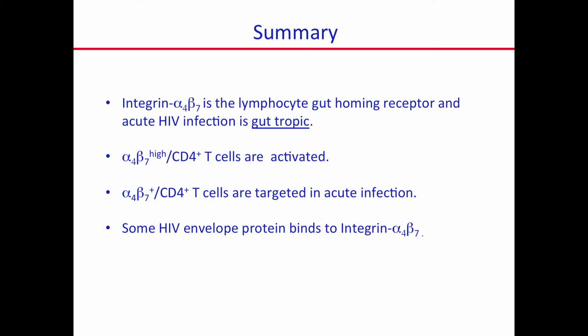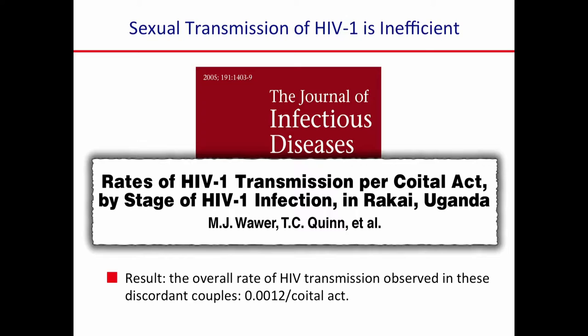One of the things that I think is important to keep in mind is that sexual transmission of HIV — at least mucosal transmission — is a relatively inefficient event. This is a study from Tom Quinn in our lab looking at discordant couples in the Rakai district of Uganda. What he's showing is that in most cases in these discordant couples — where one partner is infected and the other not — it really takes multiple coital acts in order for transmission to occur. What this means is that people are exposed multiple times, in all likelihood, before the infection actually takes.